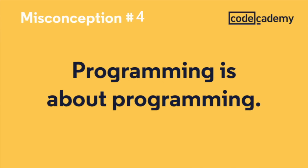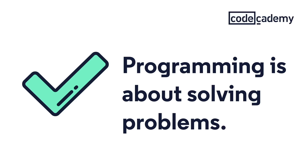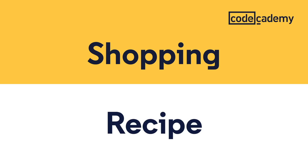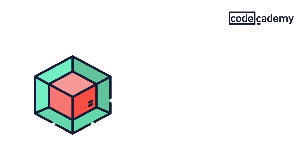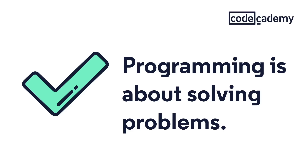Misconception number four: programming languages are about programming — meaning it's just cranking out lines of code. The truth is that programming is about solving problems. Picking a programming language without a problem is like going shopping for ingredients without a recipe. You can buy a bunch of hypothetical ingredients, but unless you know what you're making, you might not have what you need. I recommend that learners start with a problem they're trying to solve first, and then learn what popular frameworks and languages have been made to suit that specific challenge. It's more helpful to start with a problem first than with a programming language.